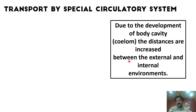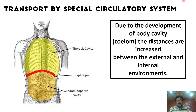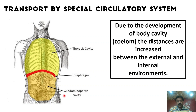When the coelom is formed, the distance increases between cells and the environment. For example, if we talk about humans, this is our body cavity — the coelom. Our coelom is divided into two cavities: one is the thoracic cavity and the other is the abdominopelvic cavity. These are separated by a muscular sheet called the diaphragm.